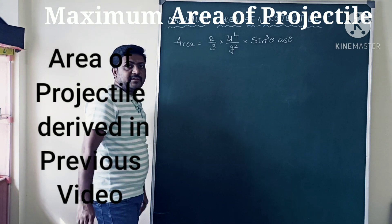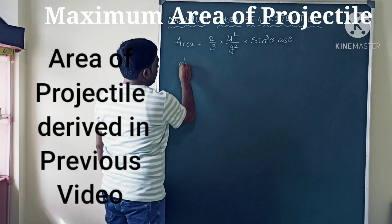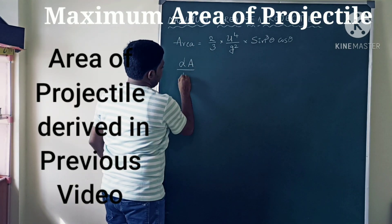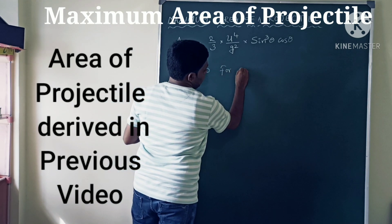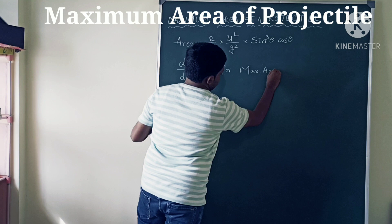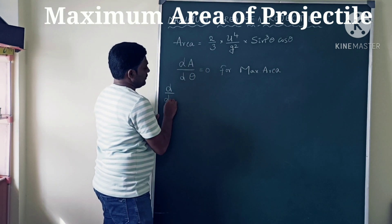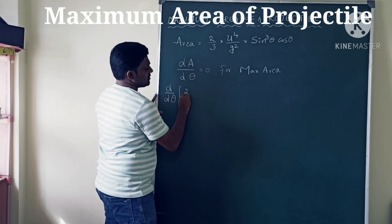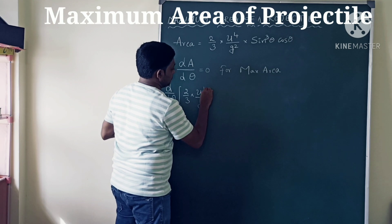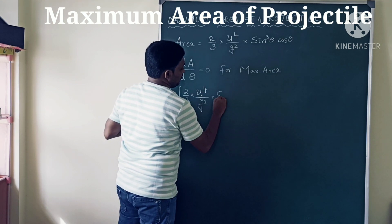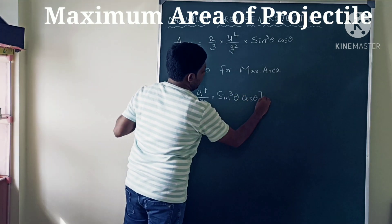For getting the maximum area with respect to theta, dA/dθ should be equal to zero. So we set d/dθ of the area formula — (2/3) × u⁴/g² × sin³θ × cosθ — equal to zero.